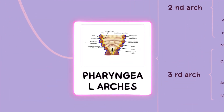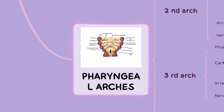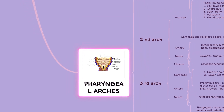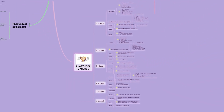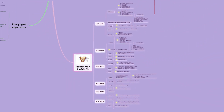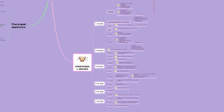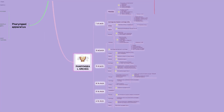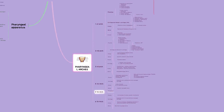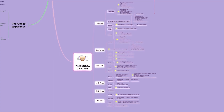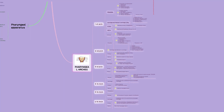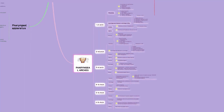Finally, coming to mesodermal origin, the development of pharyngeal arches gives rise to various structures throughout the body. There are a total of six pharyngeal arches and each arch has components like nerve, muscle, cartilage and artery. The fifth arch is rudimentary and disappears. You can pause the video here and take down this section of the mind map for information on the pharyngeal arches.